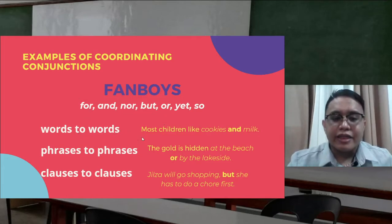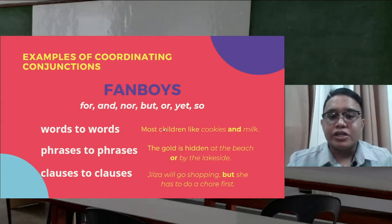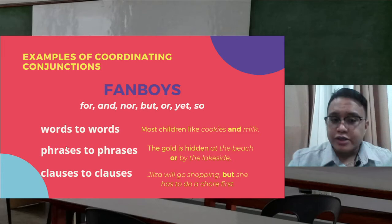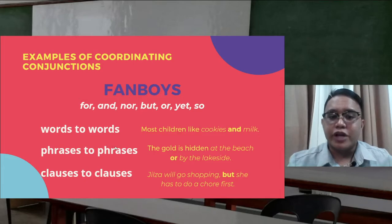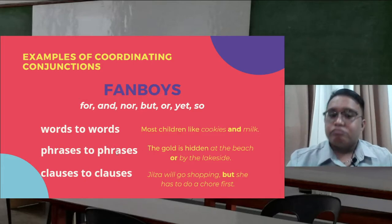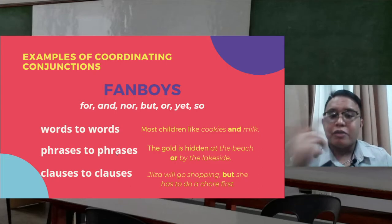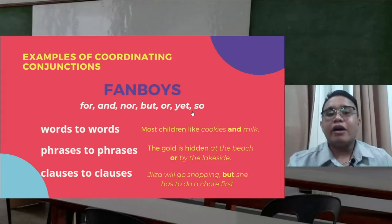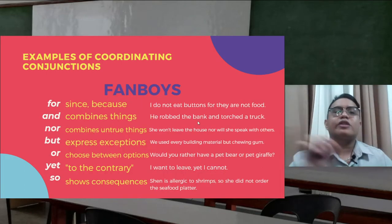For phrases to phrases: 'The boy is hidden at the beach or by the lakeside' — 'at the beach' is connected to 'by the lakeside' by the word 'or.' For clauses to clauses: 'Jilza will go shopping but she has to do a chore first.' Remember, clauses have a subject and a verb, and here one clause is connected to the other by the word 'but.'